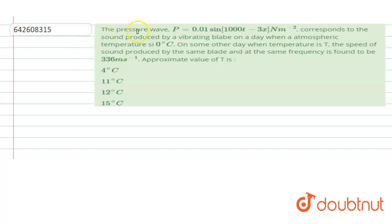Hello, the problem states that the pressure wave P is given by 0.01 sine of 1000T minus 3X Newton per meter square, corresponds to the sound produced by vibrating plate on a day when the atmospheric temperature is 0 degree Celsius.